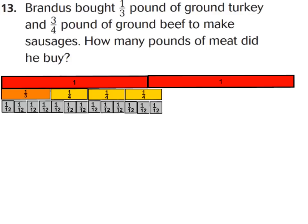Let's take a look at our word problems. For number 13, it says: Brandis bought 1/3 of a pound of ground turkey and 3/4 pounds of ground beef to make sausages. How many pounds of meat did he buy? I went ahead and laid down a 1/3 piece and 3/4. As I laid them side by side and put a 1 whole above it, I realized my answer is going to be greater than 1 whole, so I laid one more whole down. The sum will be a mixed number.